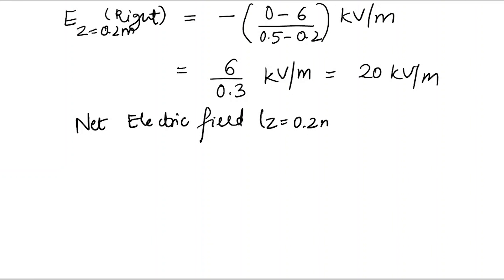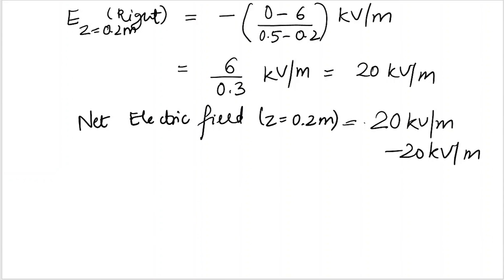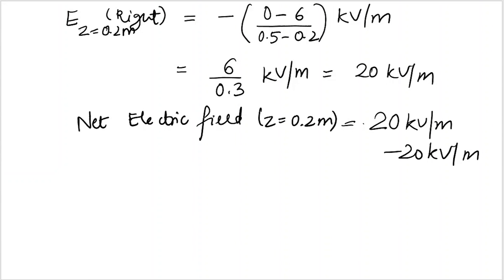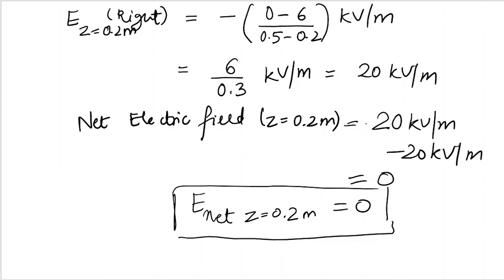So the net electric field at Z equal to 0.2 meter — the contributions from the left and right parts are equal in magnitude but opposite in direction, so they cancel out. Therefore, the net electric field at Z equal to 0.2 meter is zero. We also know the property that the electric field inside a conductor will always be zero, which is consistent with this result.